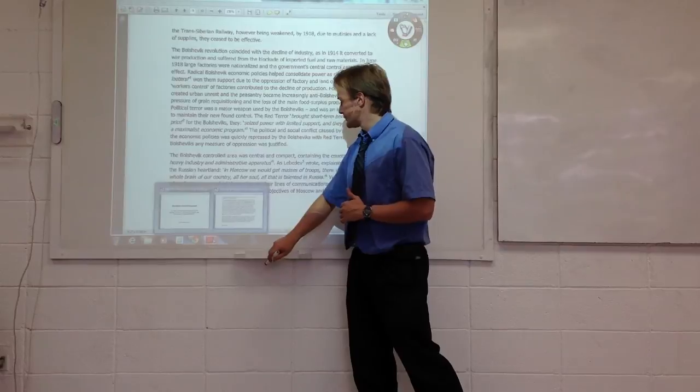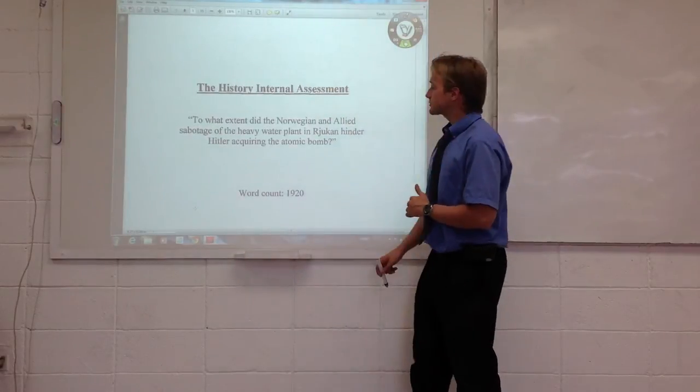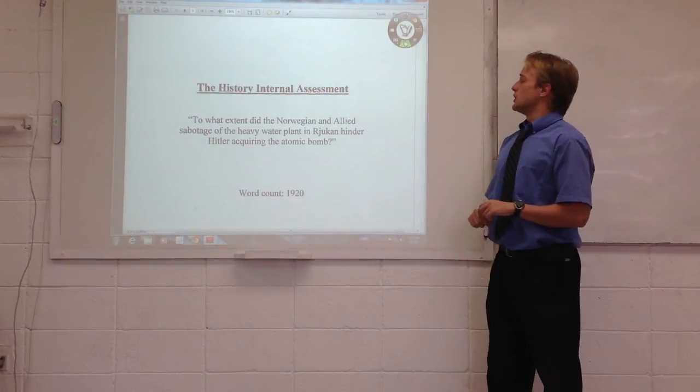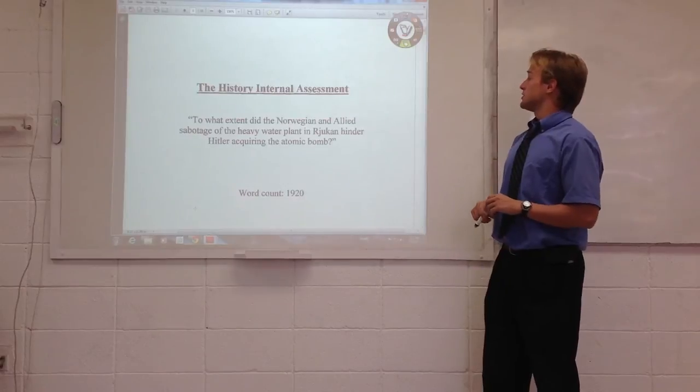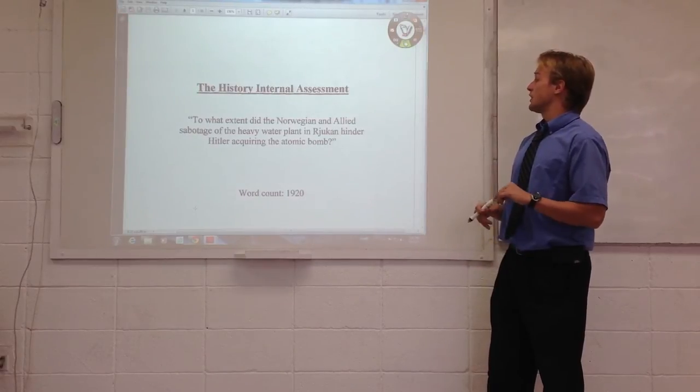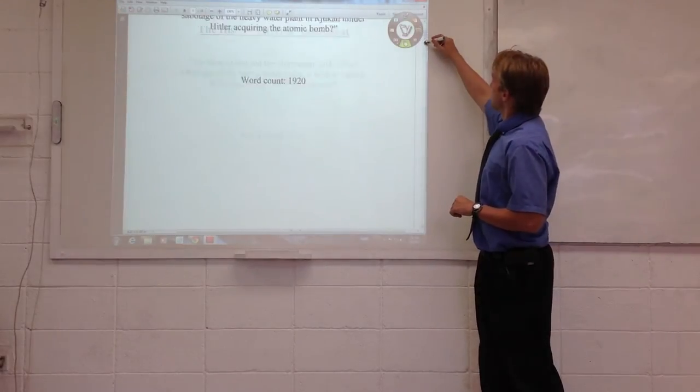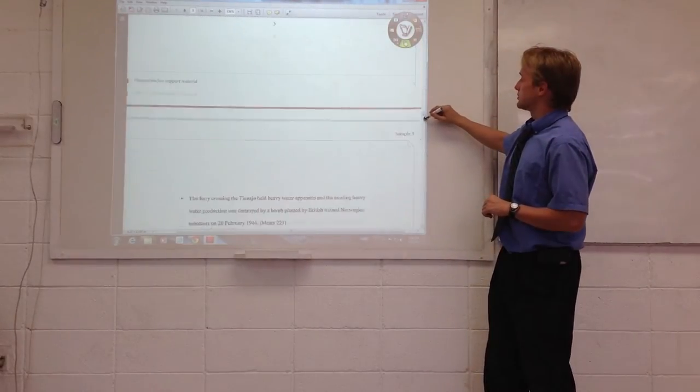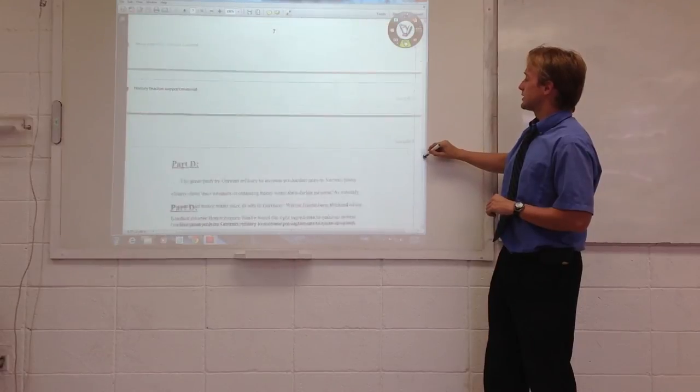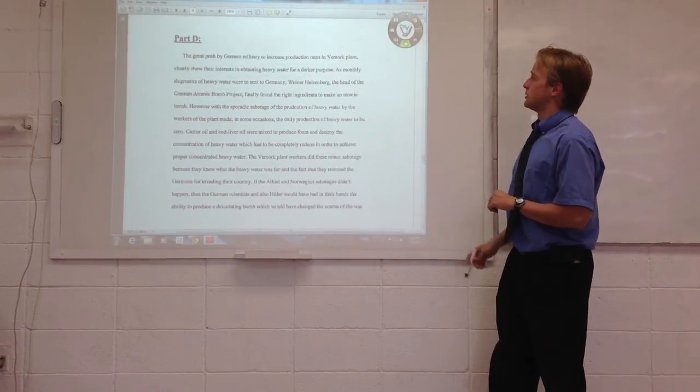Let's go to the weak sample. We've seen this one before, too. The question is, to what extent did the Norwegian and Allied sabotage of the heavy water plant in Rjukan hinder Hitler acquiring the atomic bomb? So if we go down to the analysis section in this one, there is a problem immediately.